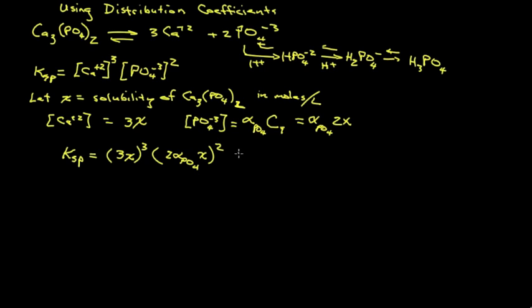We expand this, we get 27X cubed times 4 alpha phosphate squared times X squared, or 108 alpha squared times X to the fifth.